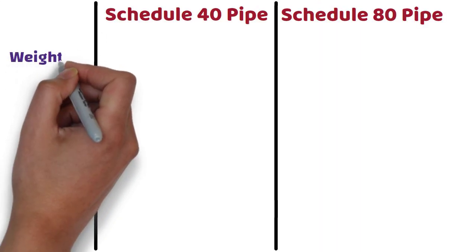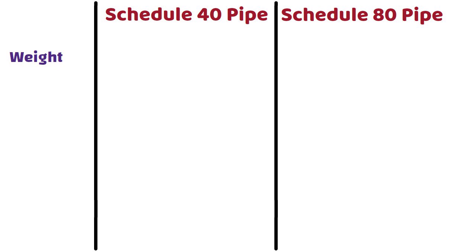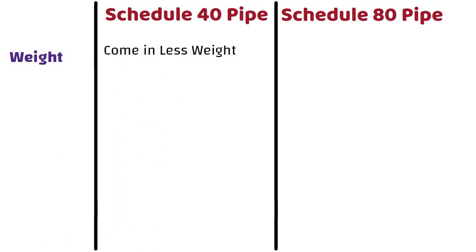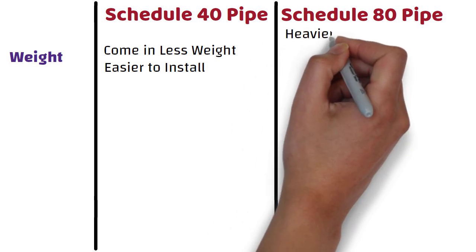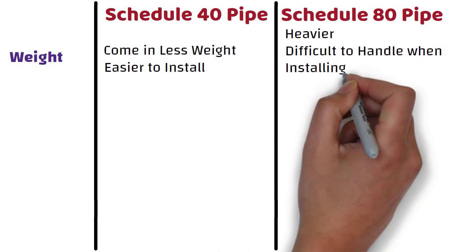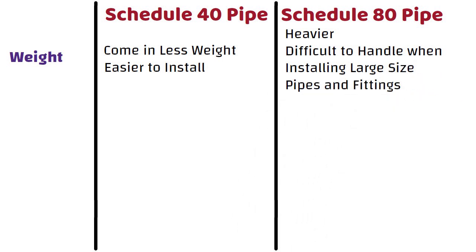Weight: When comparing weight, schedule 40 pipes are lighter than schedule 80 pipes, which makes them easier to install. Schedule 80 pipe has a thicker wall and is therefore heavier, making it generally more difficult to handle when installing large size pipes and fittings.